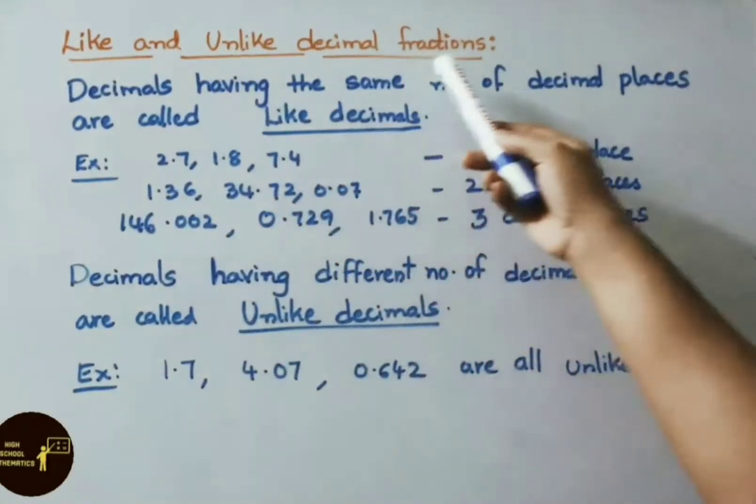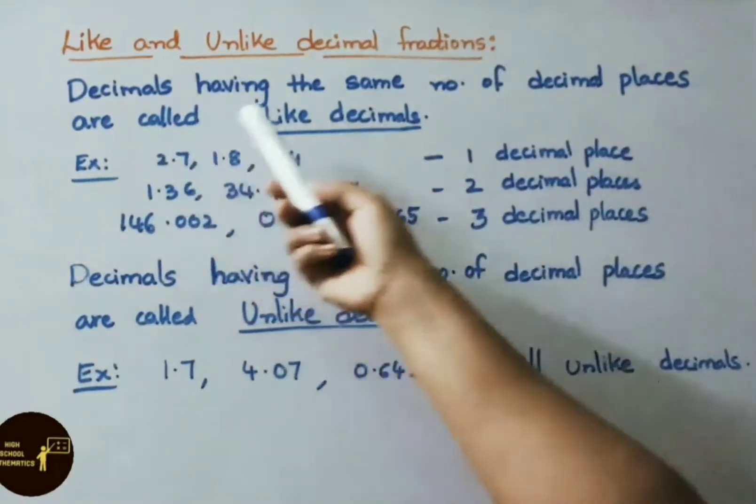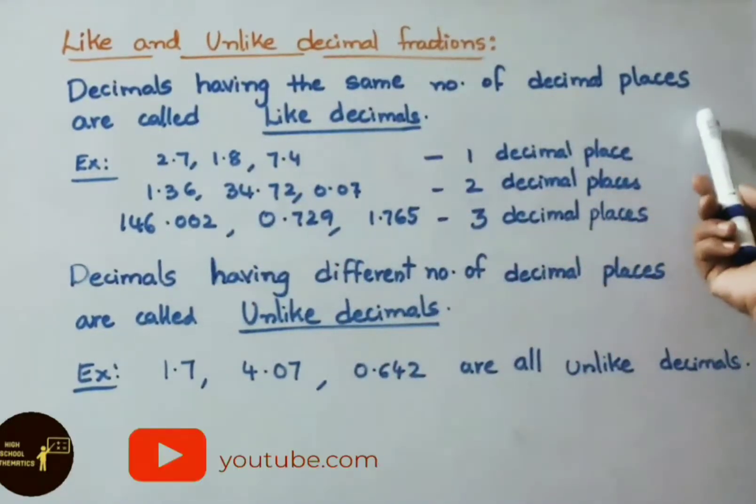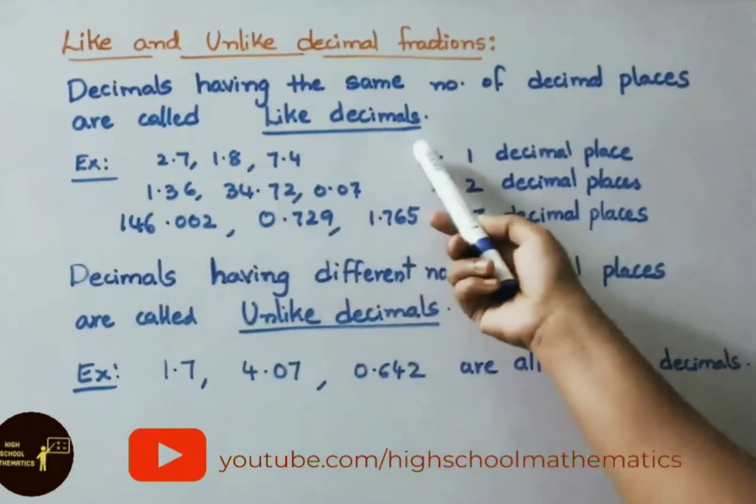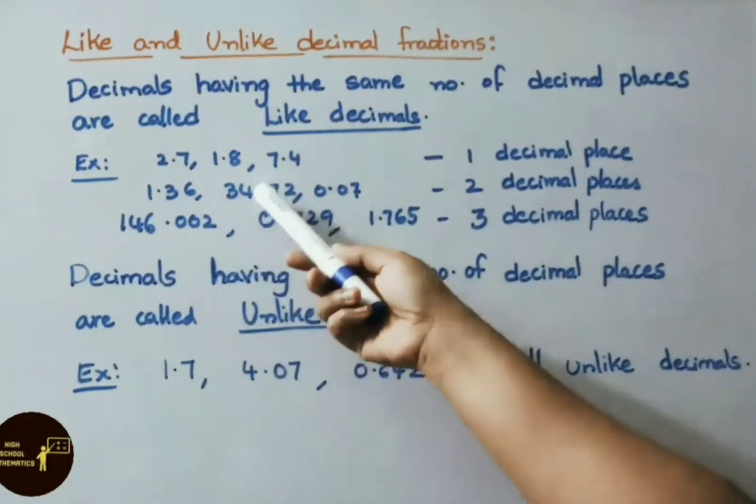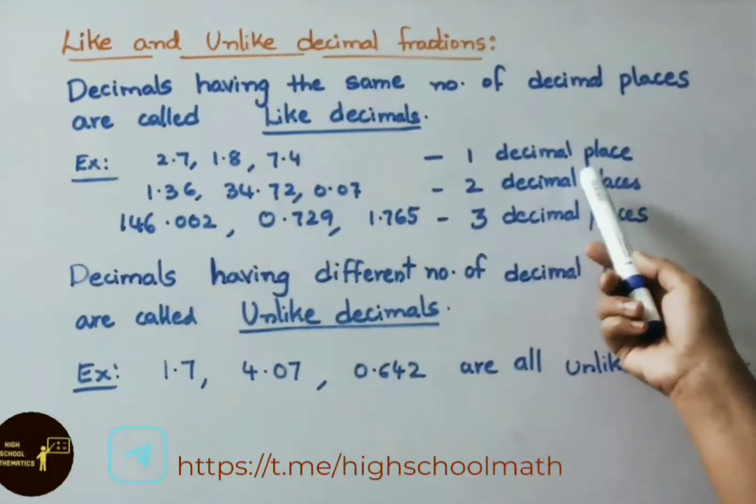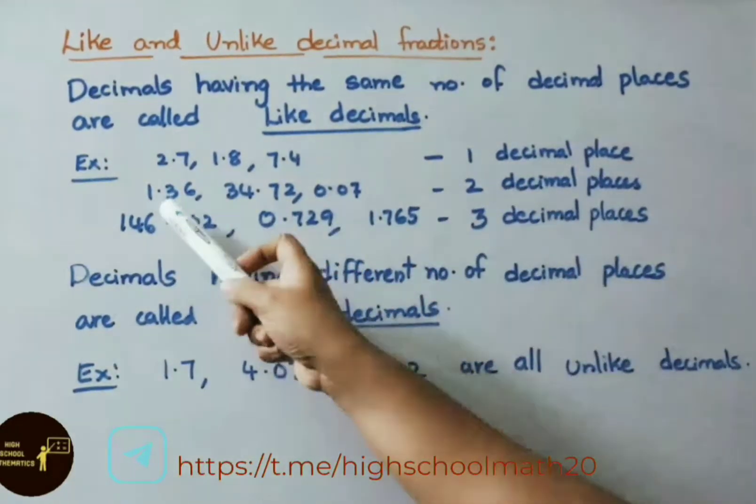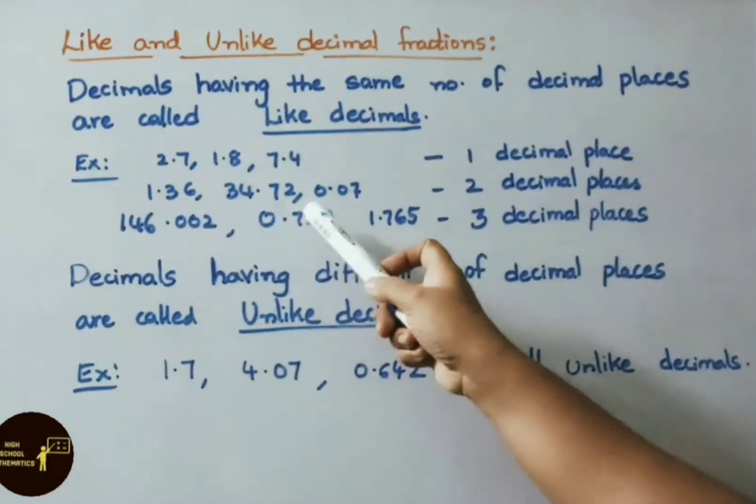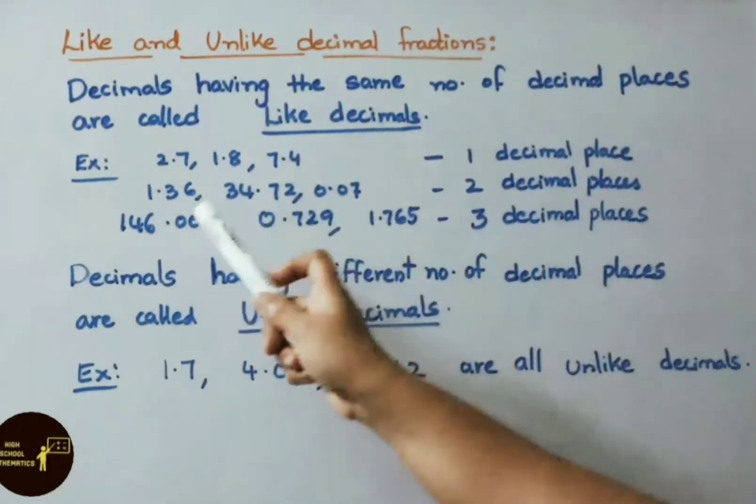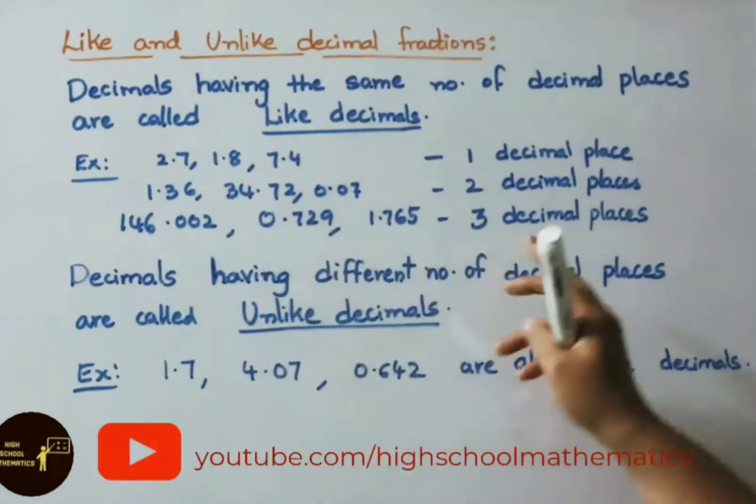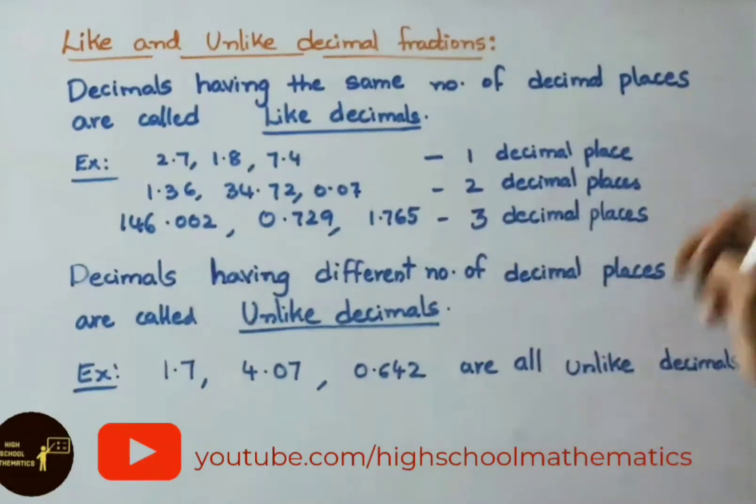Like and unlike decimal fractions. Decimals having the same number of decimal places are called like decimals. See the example: 2.7, 1.8, 7.4. All these are examples of one decimal place. Another example: 1.36, 34.7, 2.07, 0.07. Here two decimals are there. So all these are examples of two decimal places.